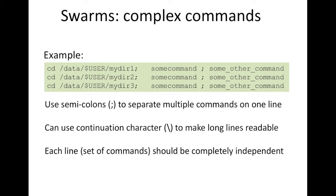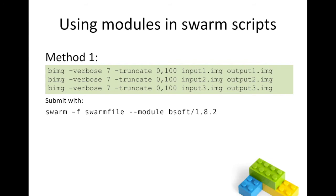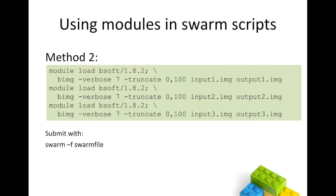Remember that each line, each set of commands, should be completely independent. If you want to use modules in your swarm scripts, you can specify the modules to load on the swarm command line using swarm -f swarmfile --module and the module name. Swarm will load this module before each command is run in each subjob. Alternatively, you can load the module within your swarm command file by separating the module load command with a semicolon from the executable command, but that module load command must appear on each line since each line becomes a separate subjob. Then submit with swarm -f and the name of your swarm file.